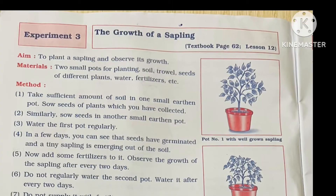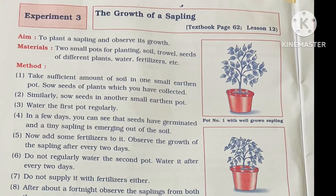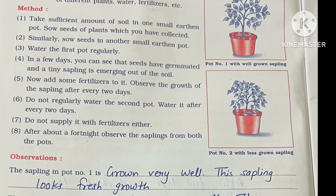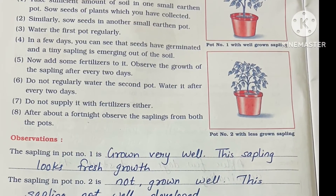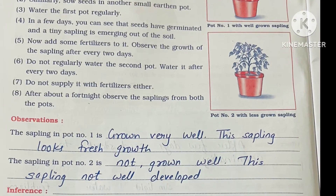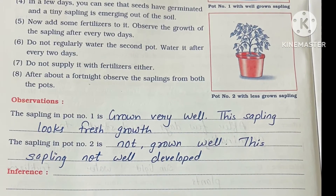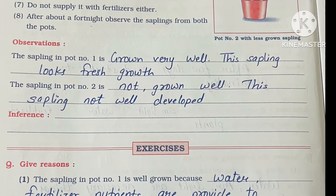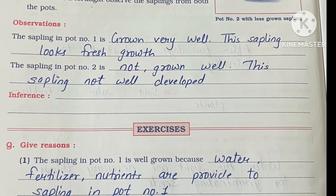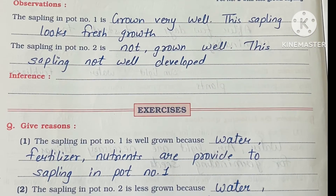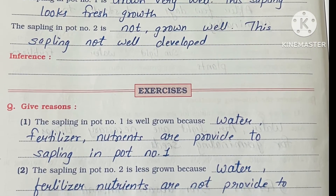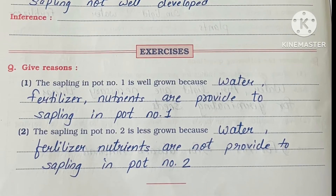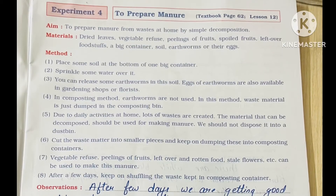Experiment number 3 is the growth of a sapling. Whenever a plant has to grow, it requires some amount of water, sunlight, and fertilizers. Then only we can say the pot shows the presence of a plant with good health. Water, fertilizers, and nutrients are very important.